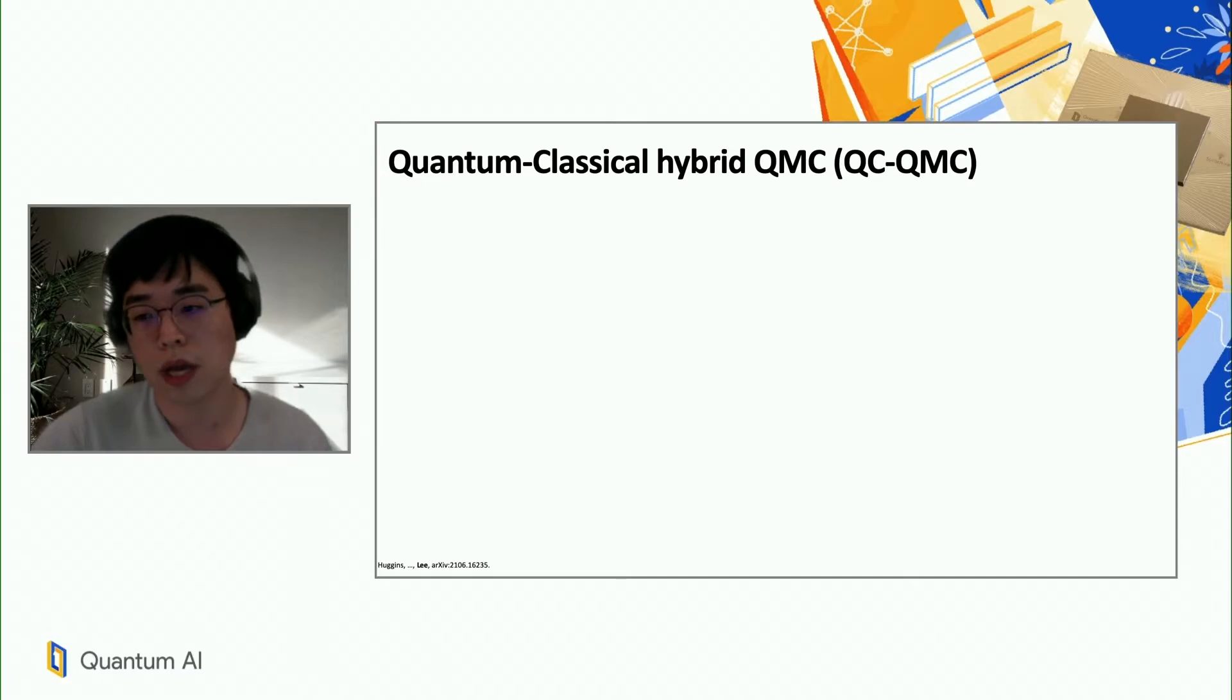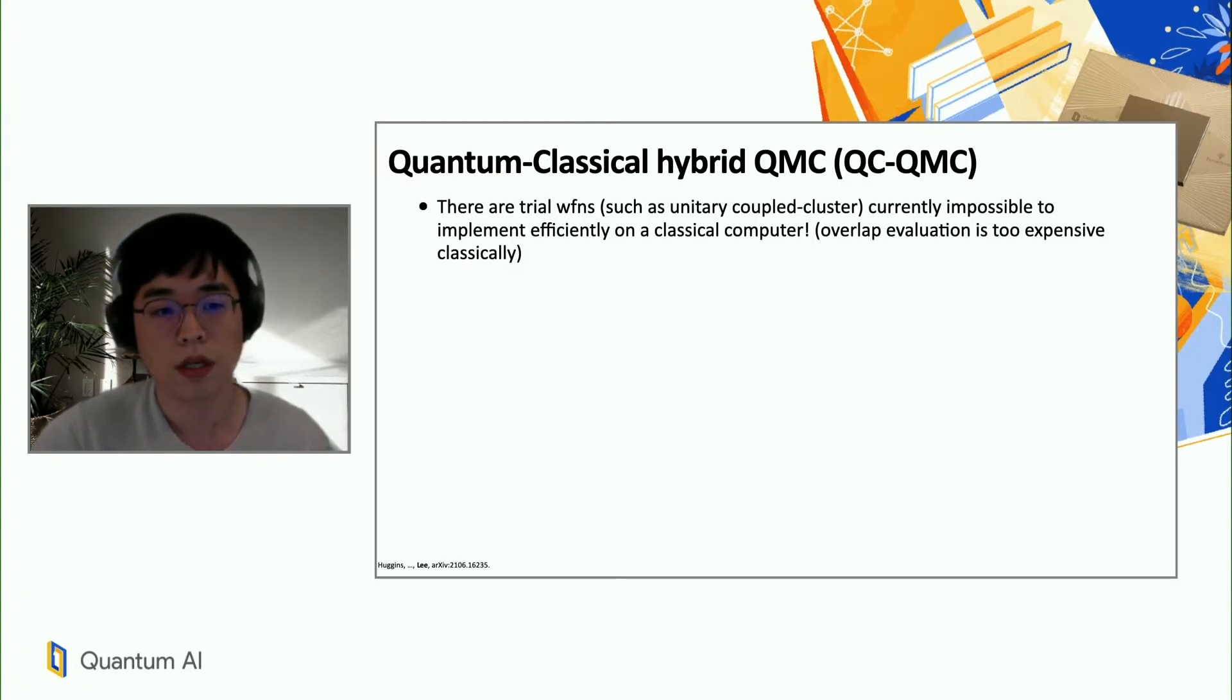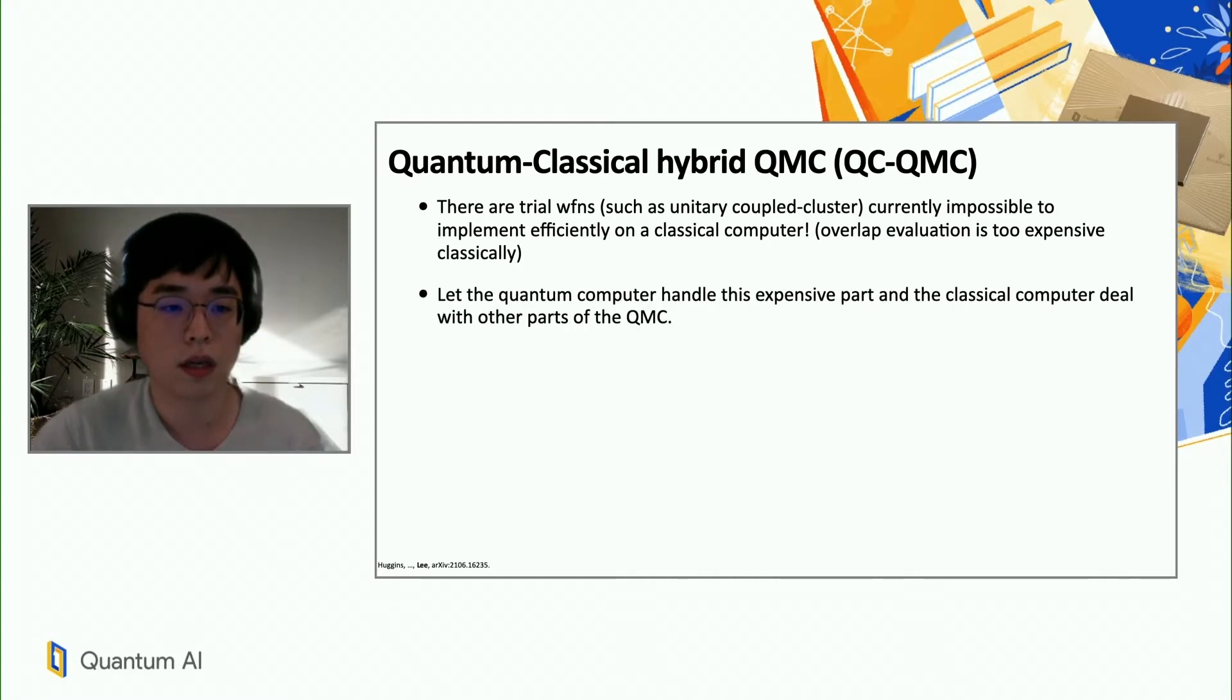So this really led us to a hybrid algorithm that is referred to as QCQMC in short. So like I said, there are trial wave functions which I hope to use for quantum Monte Carlo simulations, but they are just difficult to implement classically, namely because the overlap evaluation necessary to perform the QMC calculation is too expensive classically. So let the quantum computer handle this expensive part and the classical computer deal with all the other parts of the quantum Monte Carlo algorithm. And this is really the essence of our hybrid algorithm.